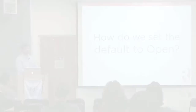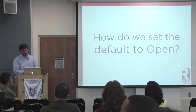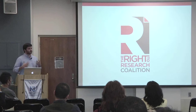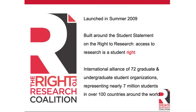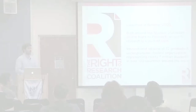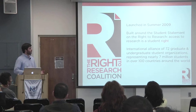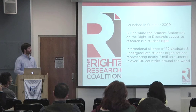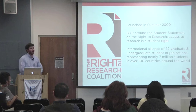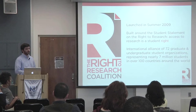How do we actually set the default to open? How do we switch from the subscription-based model to a fully open model? I'm the director of the Right to Research Coalition. We launched in the summer of 2009, so we're just about four years old. We're based around what we call the Student Statement on the Right to Research — essentially a statement of principles saying that with the internet, academic research articles really can and should be free to everyone. Today we have just over 70 graduate and undergraduate student organizations collectively representing about seven million students in over 100 countries around the world.